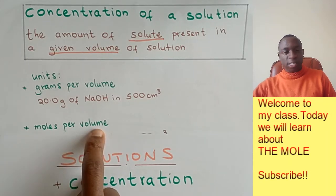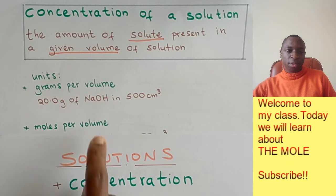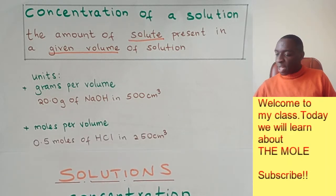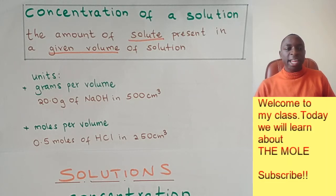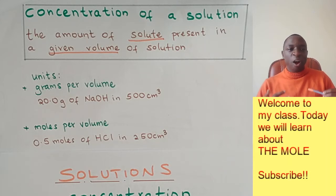And then, of course, dissolve it in a given volume. So, for example, we can have 0.5 moles of HCl, that is hydrochloric acid, in 250 cubic centimeters. So that is another way of expressing the concentration of a solution.